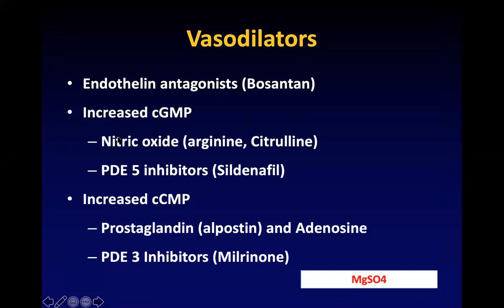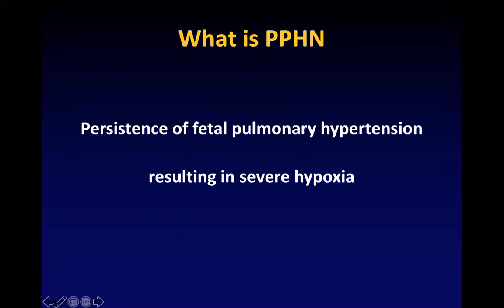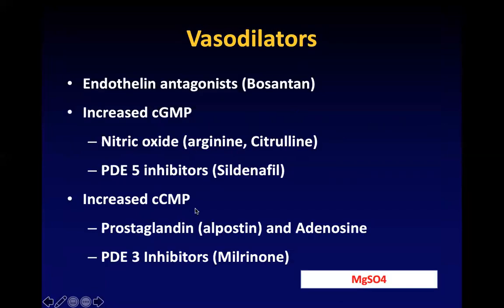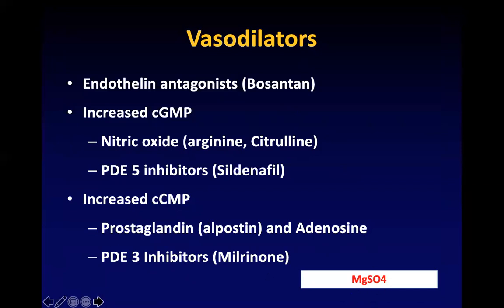Vasodilators include endothelin receptor antagonists like bosentan. You can increase cyclic GMP by using inhaled nitric oxide, or precursors like arginine and citrulline, or by inhibiting phosphodiesterase-5. You can increase cyclic AMP by using prostacyclins like alprostadil or adenosine, or inhaled iloprost, or by inhibiting phosphodiesterase-3 using milrinone. Magnesium has a peculiar effect where it directly acts on the muscle vessels to cause vasodilation, though it is not a preferred medication for PPHN.